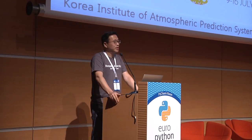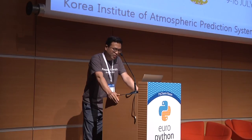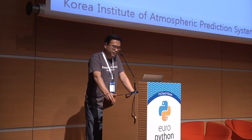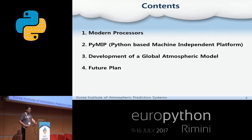I'm going to talk about methodology to take advantage of various modern processors for large-scale scientific computations. I have four main parts: first, I will introduce some modern processors focused on CPU and GPU. Second, I will introduce a new simple Python module named PyMip, which I developed for multi-platform. Third, I will present the results of applying PyMip to a global atmosphere model. Finally, I will talk about the summary and future plans.